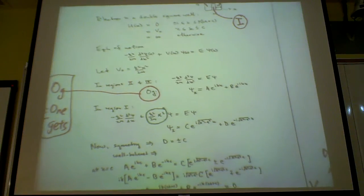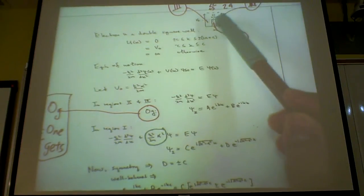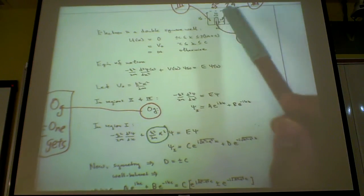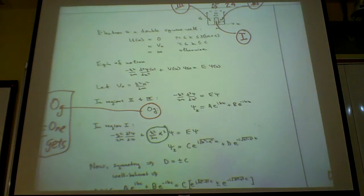You apply symmetry to the form of this wave function. Symmetry means that this square well is symmetrical on either side, or between regions two and three on either side.